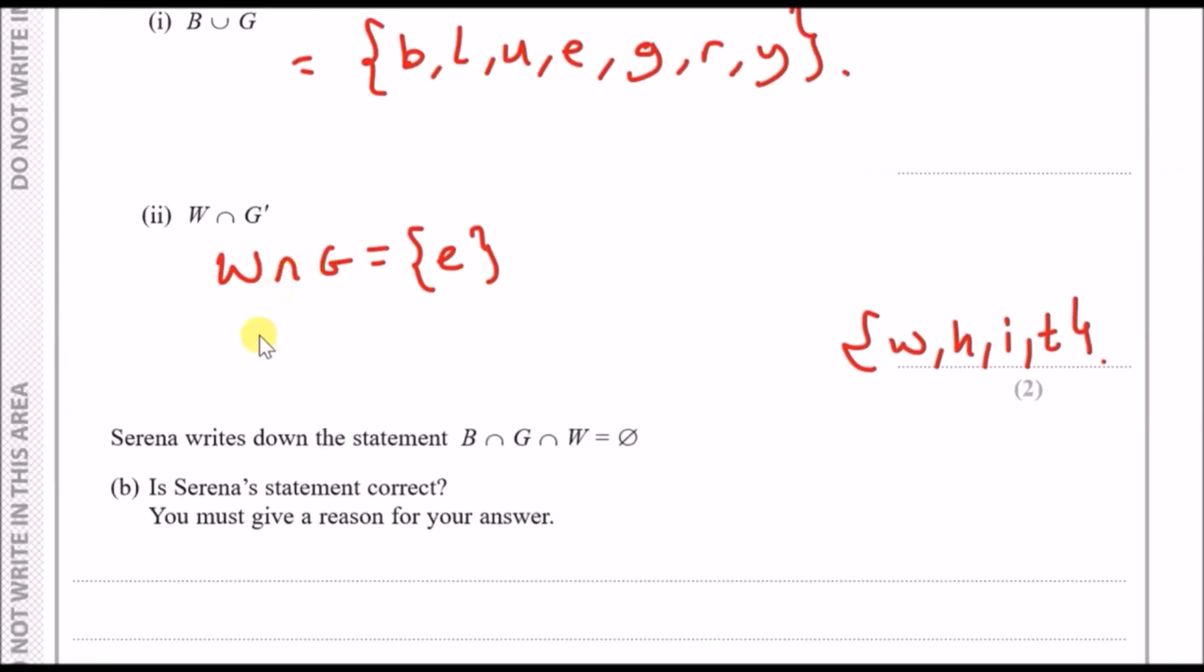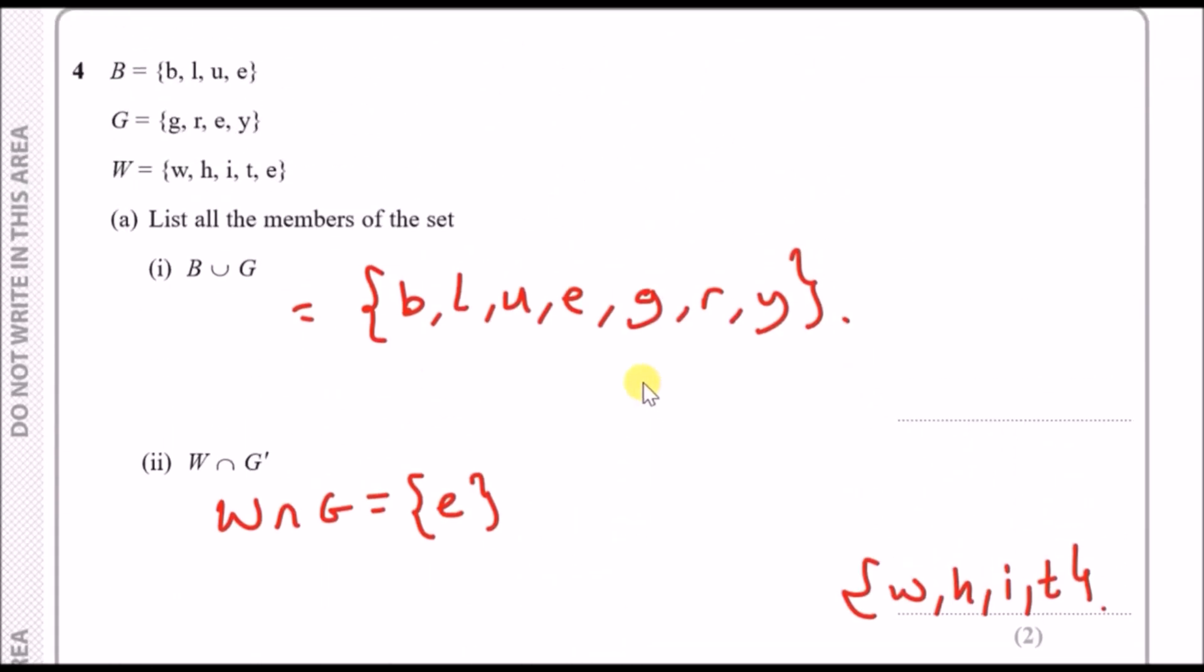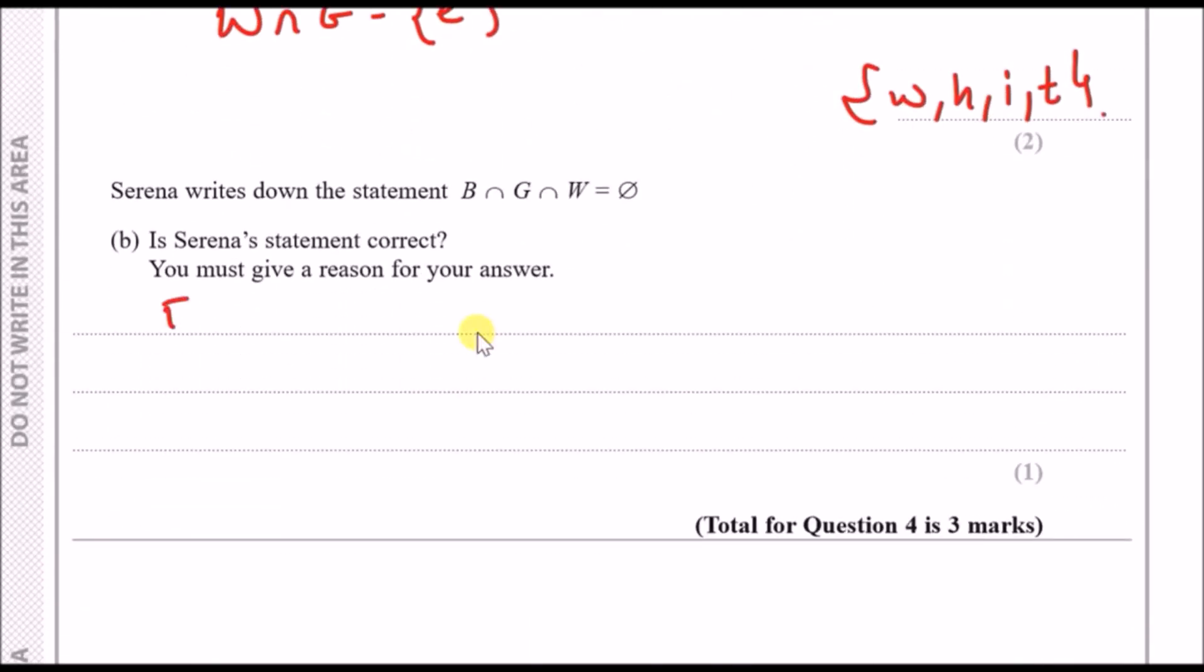When we look at the intersection between both we look at the common elements. Looking at the grey and the white they both have the letter e, so this implies that the intersection between white and not G would be what it doesn't have. It doesn't have w, h, i and t. So that'll be your answer for part two: w, h, i, t. For the last part it says Serena writes down the statement B intersecting with G intersecting W are all empty, in other words there is nothing in common between them.